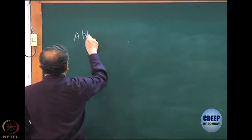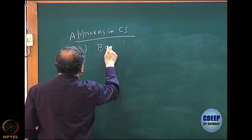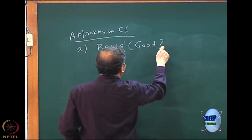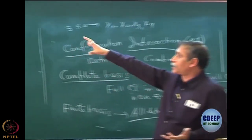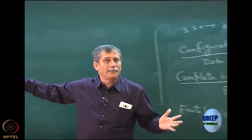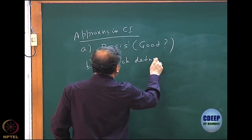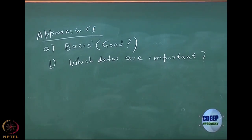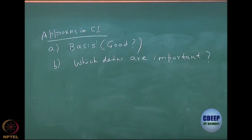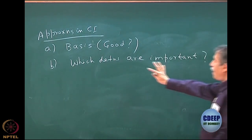The two levels of approximation in CI are: A, the basis — a good basis means that with fewer functions I can reproduce the effects of the complete basis as well as possible; and B, within that basis, which determinants are important. This basis problem is not unique to CI — it is important across all of quantum chemistry. Within a given basis, we must identify which determinants are physically significant.